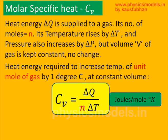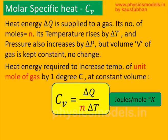A more popular way of expressing specific heat is Cv, as different from Sv. The only difference here is instead of mass in kg, they consider the number of moles. So you divide the whole thing by n, which is highlighted in red color — so instead of m, you use n. Therefore the unit also becomes joules per mole per degree Kelvin. All other things are the same.